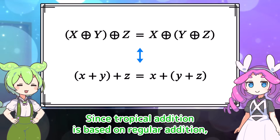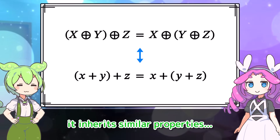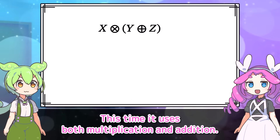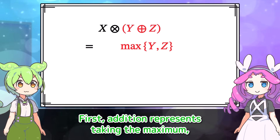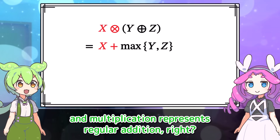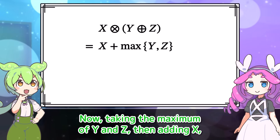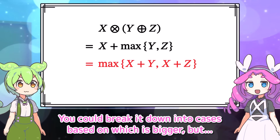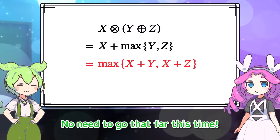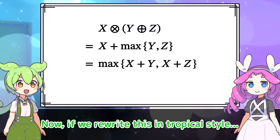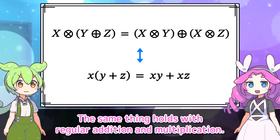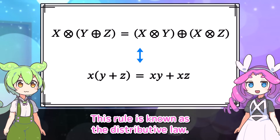This is kind of fun! Now try calculating this expression — this time it uses both multiplication and addition. First, addition represents taking the maximum, and multiplication represents regular addition. Taking the maximum of y and z, then adding x, is the same as adding x to each of y and z, then taking the maximum. If we rewrite this in tropical style, it looks like this. The same thing holds with regular addition and multiplication — this rule is known as the distributive law.